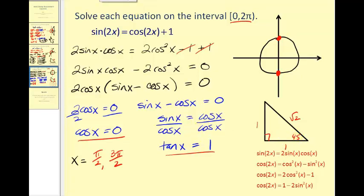Remember tangent is positive in the first quadrant and also in the third quadrant. So we'll sketch a 45-degree reference angle here as well. So the first angle would be pi over four radians. And the second angle would be 225 degrees or five pi over four radians.